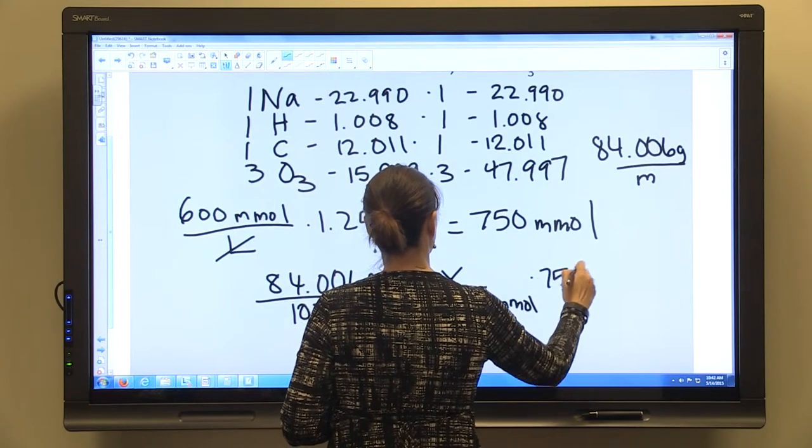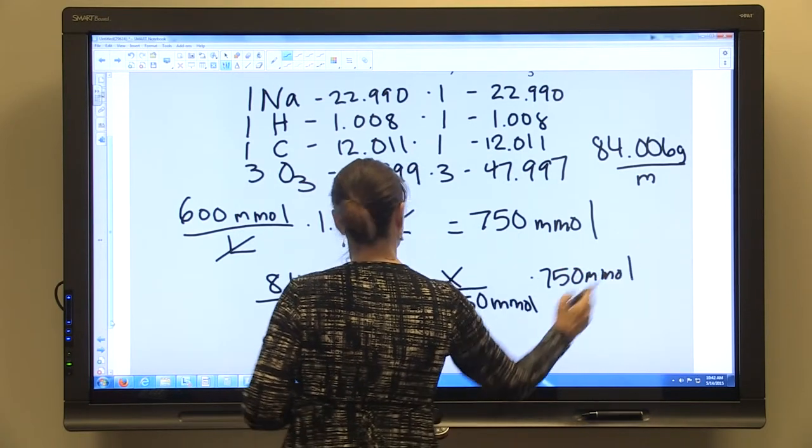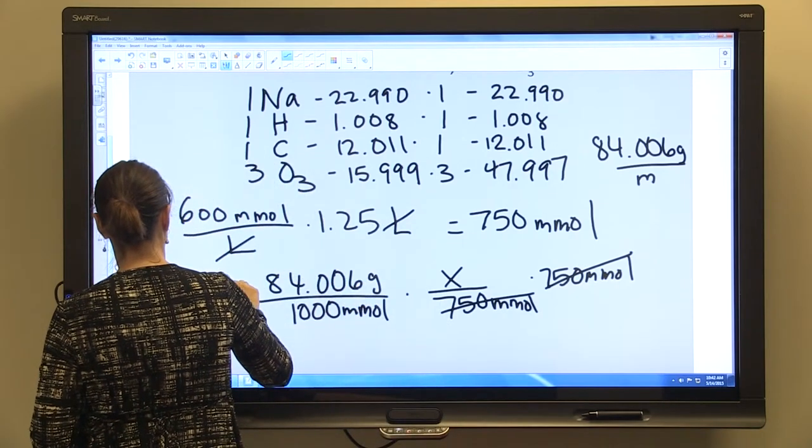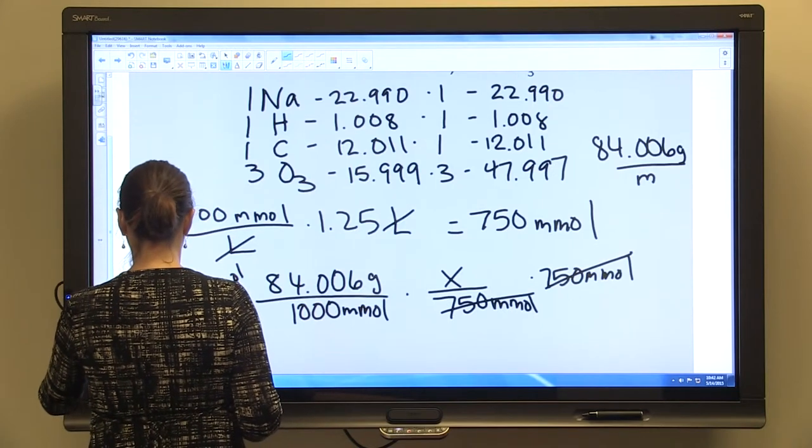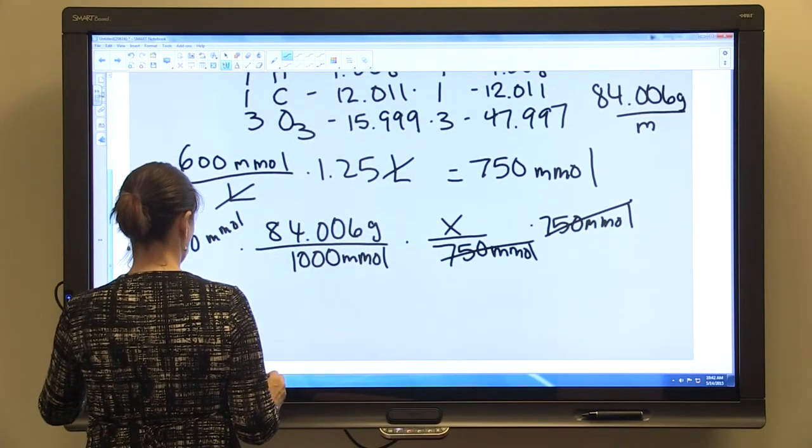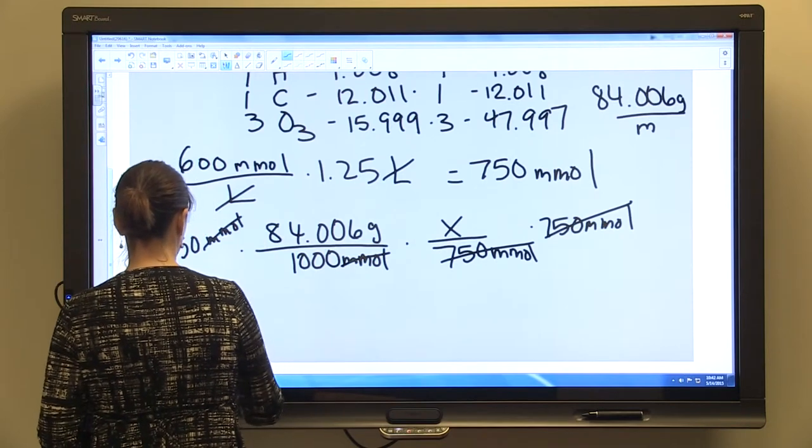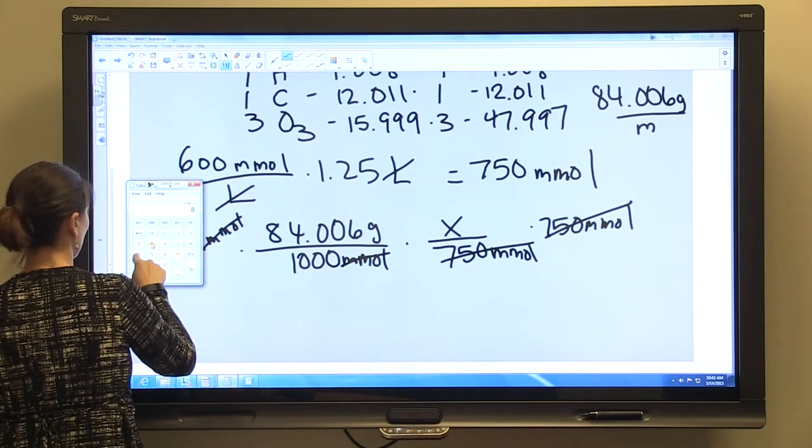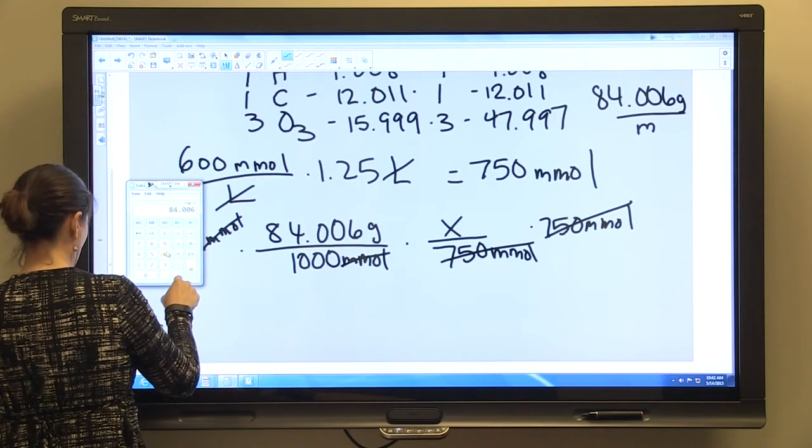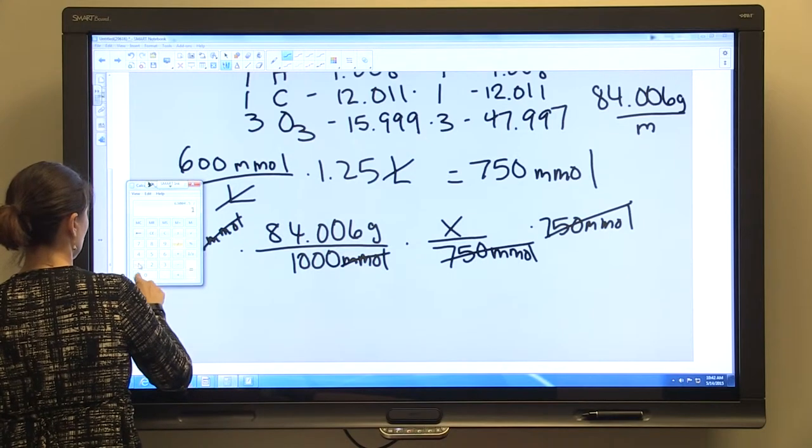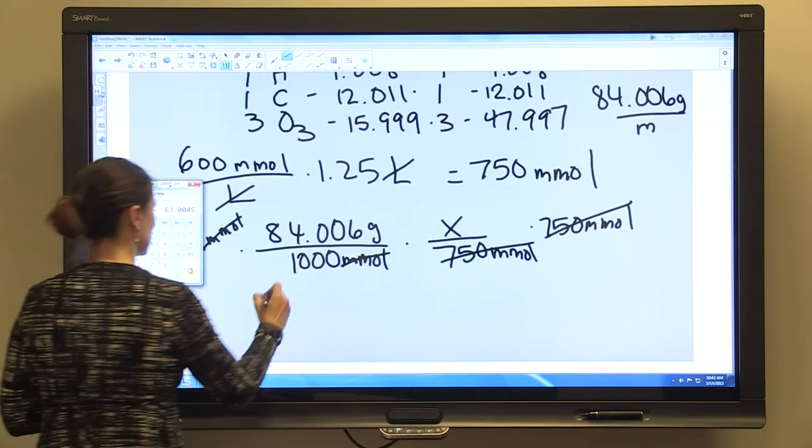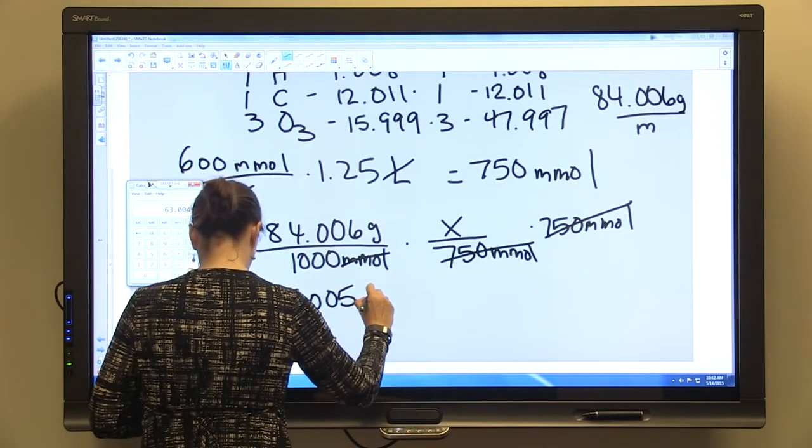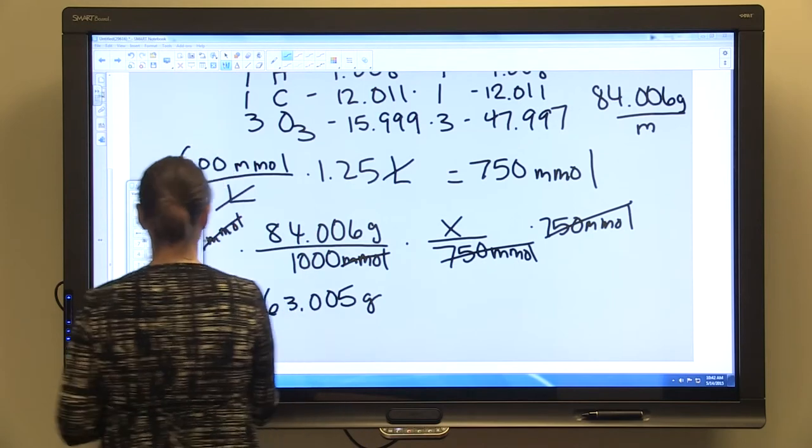Multiply both sides by 750 millimoles. Millimoles will cancel. So 750 times 84.006 divided by 1000 equals 63.005 grams, and we'll want to dissolve that.